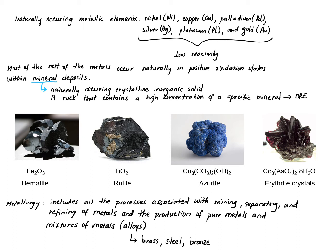From all the metals on the periodic table, only a few are found as pure metallic elements in nature: nickel, copper, palladium, silver, platinum, and gold. The reason these specific metals exist in nature in pure form is that their reactivity is very low — since they are not very reactive, they exist by themselves.